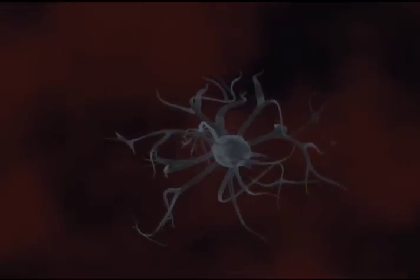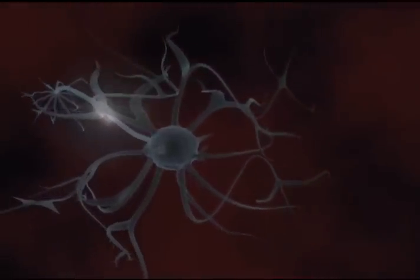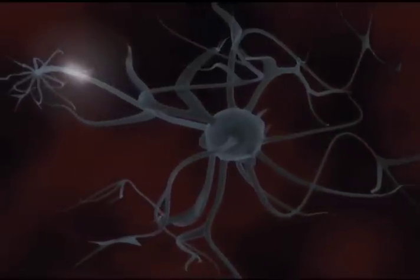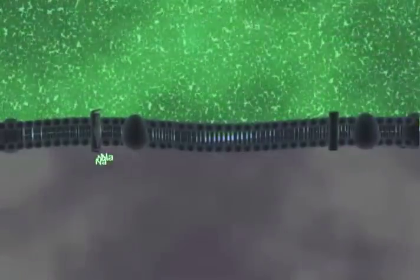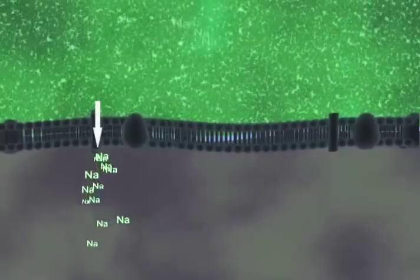First we will look at the propagation of the action potential in the unmyelinated axon. Propagation is the repeating of action potentials down the axon. The action potential is repeated because as the sodium comes in, it diffuses to adjacent areas within the axon.